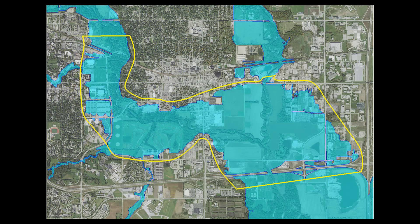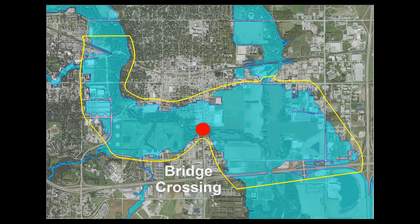The upstream model limits should be located far enough upstream to allow for natural distribution of flow before the area of interest. The initial flow distribution into the model is based on a conveyance estimate, which may not reflect the true flow distribution at that location. A general rule of thumb is two floodplain widths upstream from the area of interest.